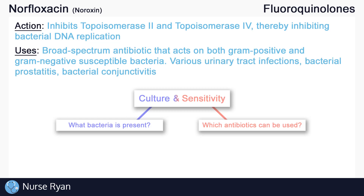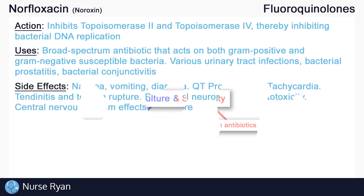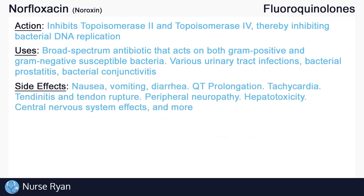Norfloxacin is typically used for various urinary tract infections, or UTIs. It can also be used for bacterial prostatitis, which is infection of the prostate gland, as long as the specific bacteria is susceptible to norfloxacin treatment. Bacterial conjunctivitis is another use of norfloxacin, in the form of an ophthalmic solution.